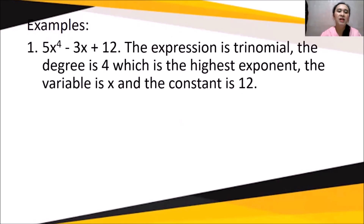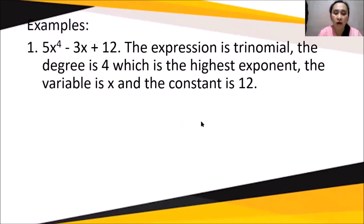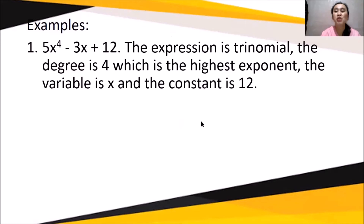Another example: 5x⁴ - 3x + 12. The expression is a trinomial. The degree is 4, which is the highest exponent. The variable is x, and the constant is 12.